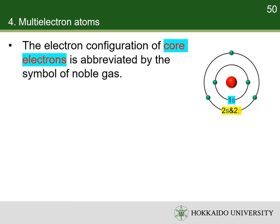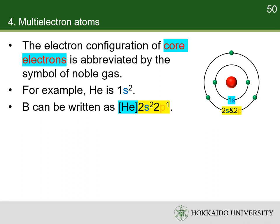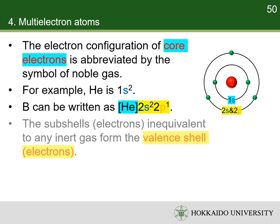Boron, for instance, has an electron configuration of 1s²2s²2p¹. It differs from helium, whose electron configuration is 1s², only by the presence of the L shell. Thus, the K-shell electrons of boron are the core electrons, and their electron configuration is abbreviated with the chemical symbol of helium. The subshells equivalent to any noble gas form the valence shell, and the electrons in the valence shell are called the valence electrons. For example, the valence shell of boron consists of the 2s and 2p subshells. Since the noble gas symbol may be redundant, it can be omitted, and only the electron configuration of the valence shell is essential. Thus, boron's electron configuration can be written as 2s²2p¹.